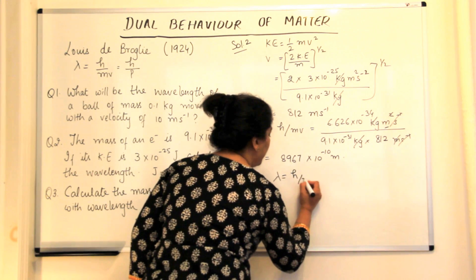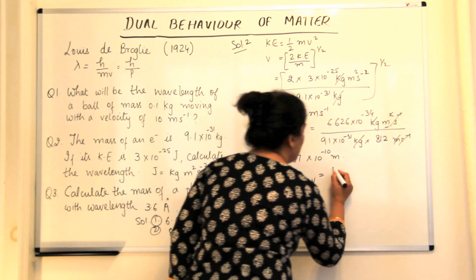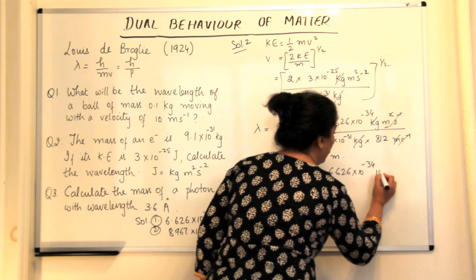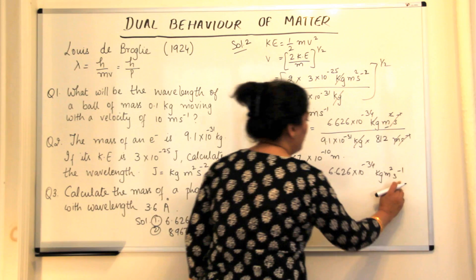You have to calculate the mass of a photon, a photon of light with wavelength 3.6 Armstrong. So let's calculate the wavelength is equal to H over MV,